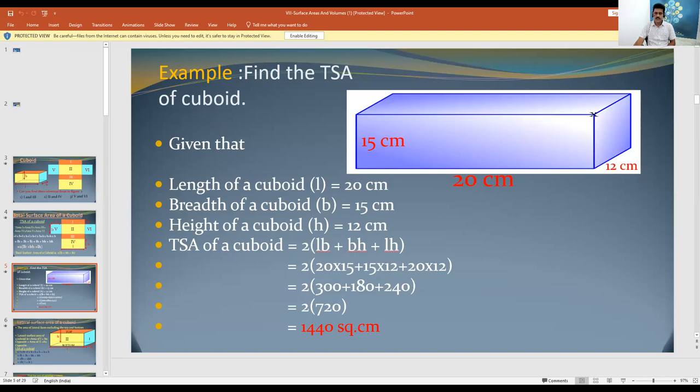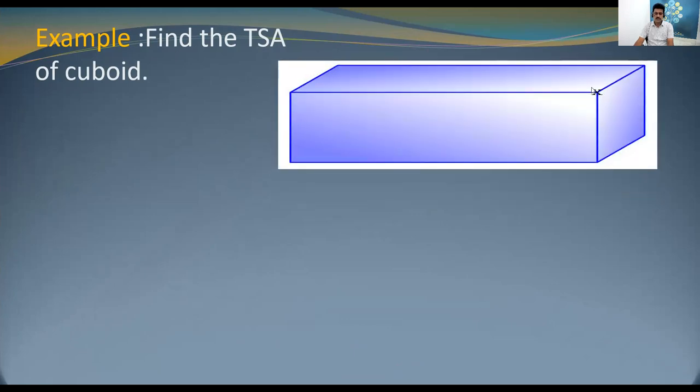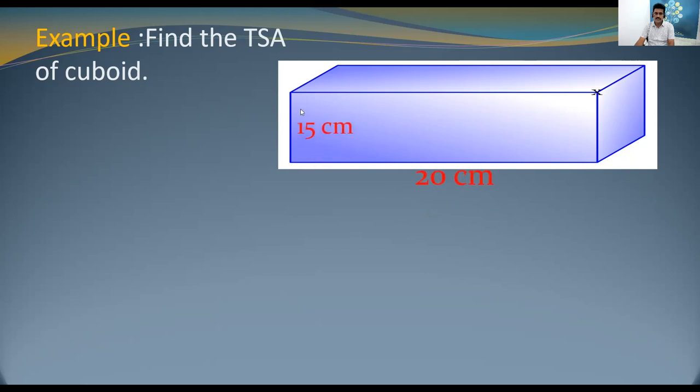The first example: find the total surface area of a cuboid. Observe here — this is a cuboid because the length, breadth, and height are all different. The dimensions given are: length = 20 centimeters, height = 15 centimeters, and breadth = 12 centimeters.